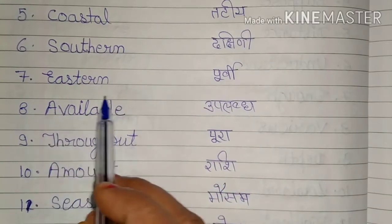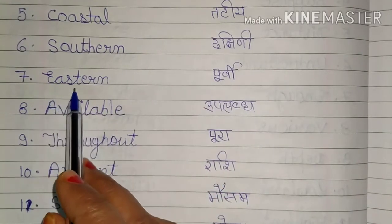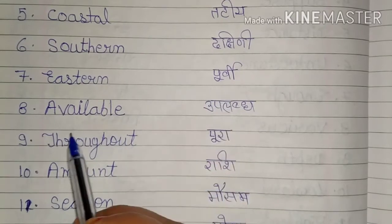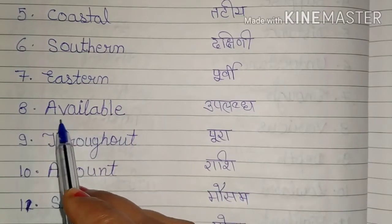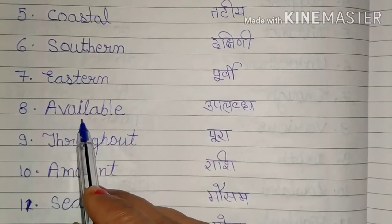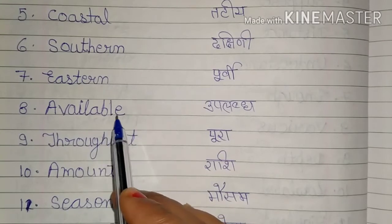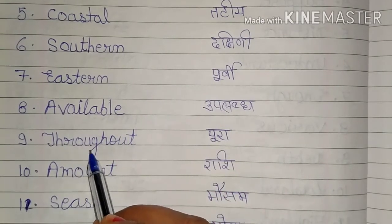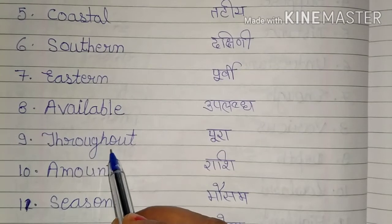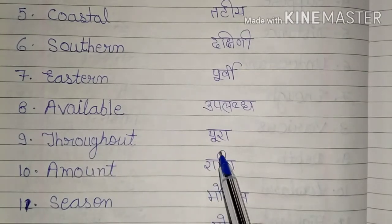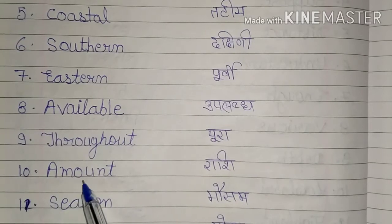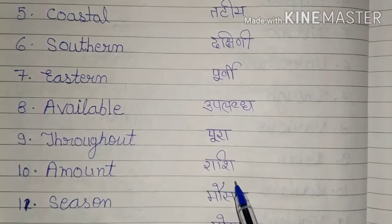Eastern, E-A-S-T-E-R-N. Eastern means Purvi — पूर्वी. Available, A-V-A-I-L-A-B-L-E. Available means Uplabdh. Throughout, T-H-R-O-U-G-H-O-U-T. Throughout का मतलब होता है पूरा — entirely. Amount, A-M-O-U-N-T. Amount means Rashi — राशि.